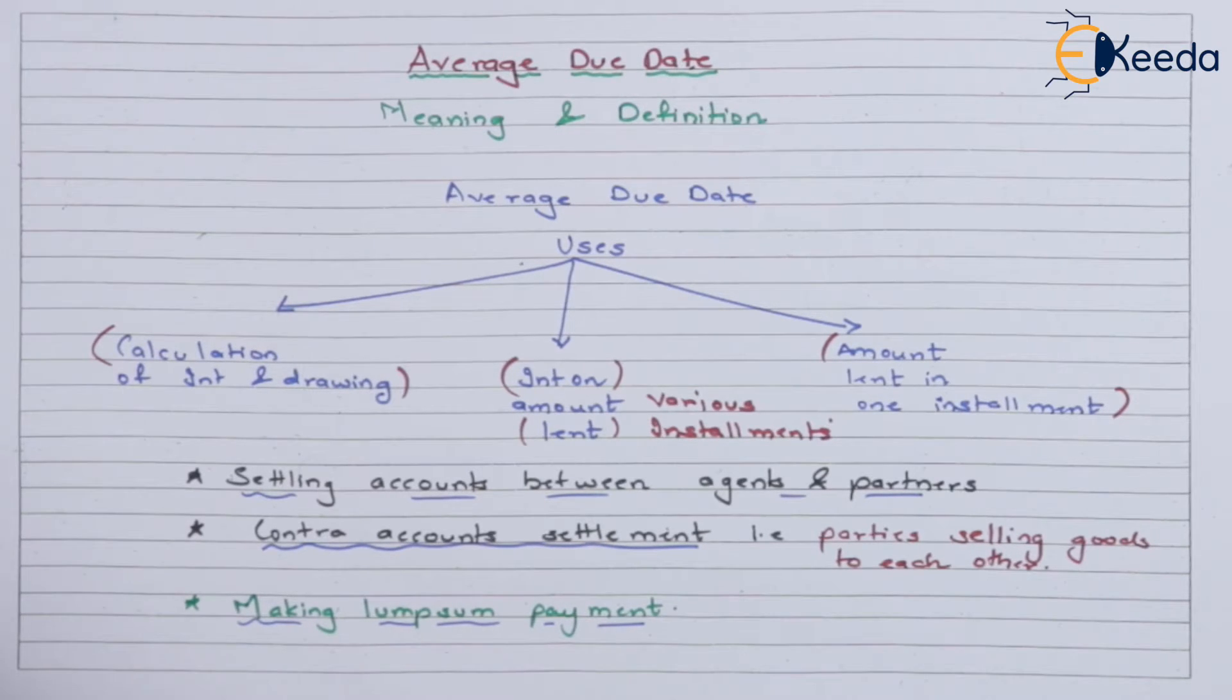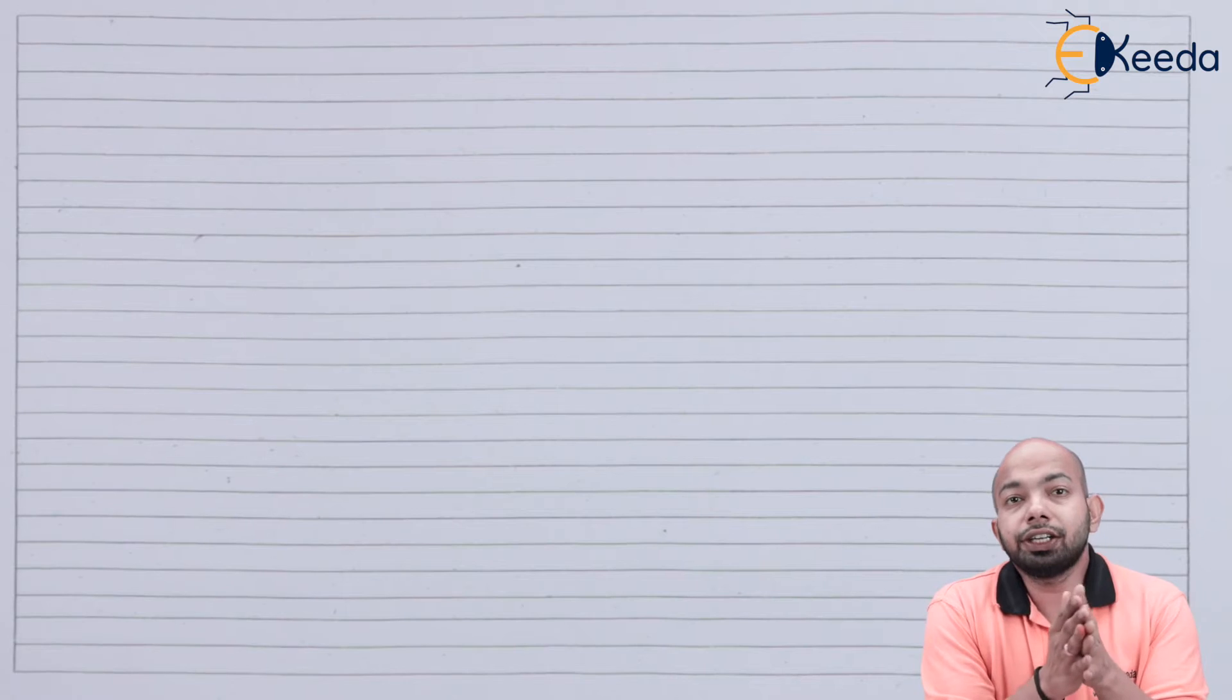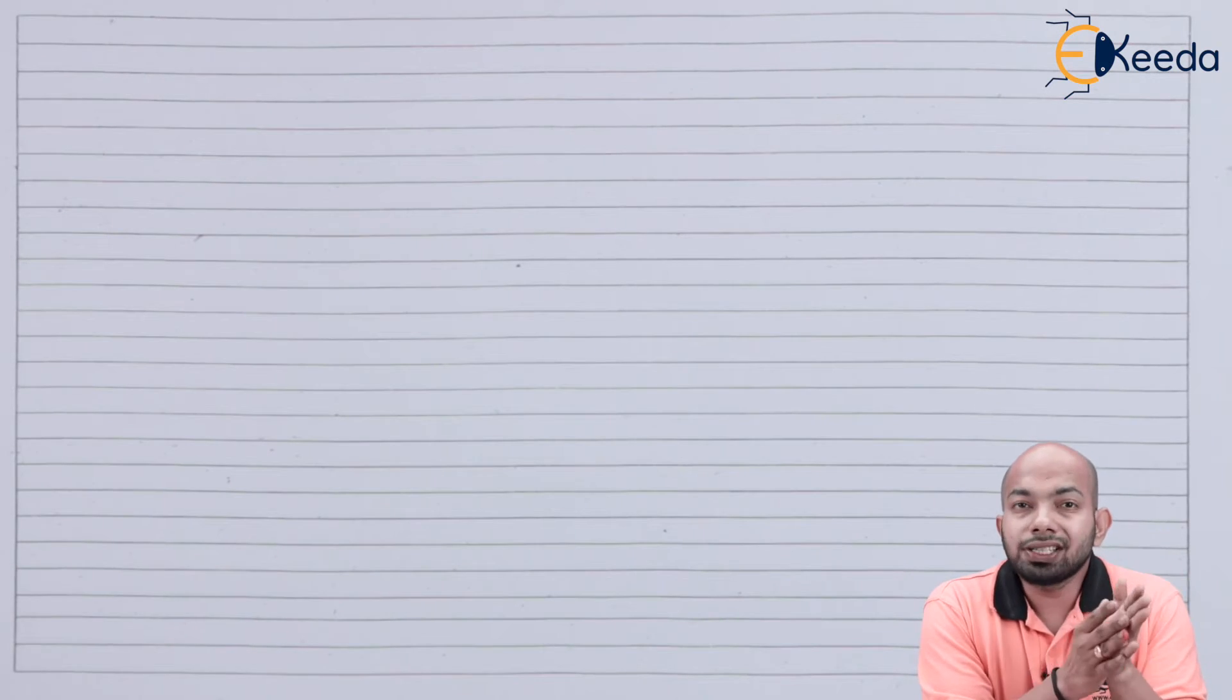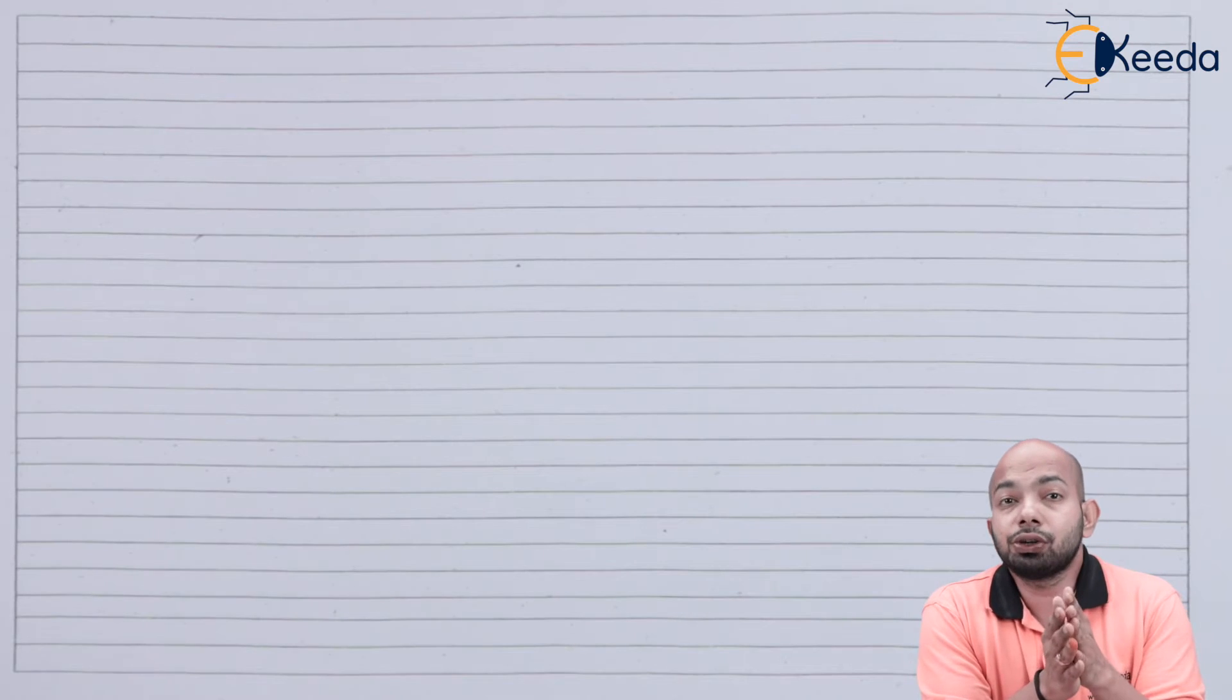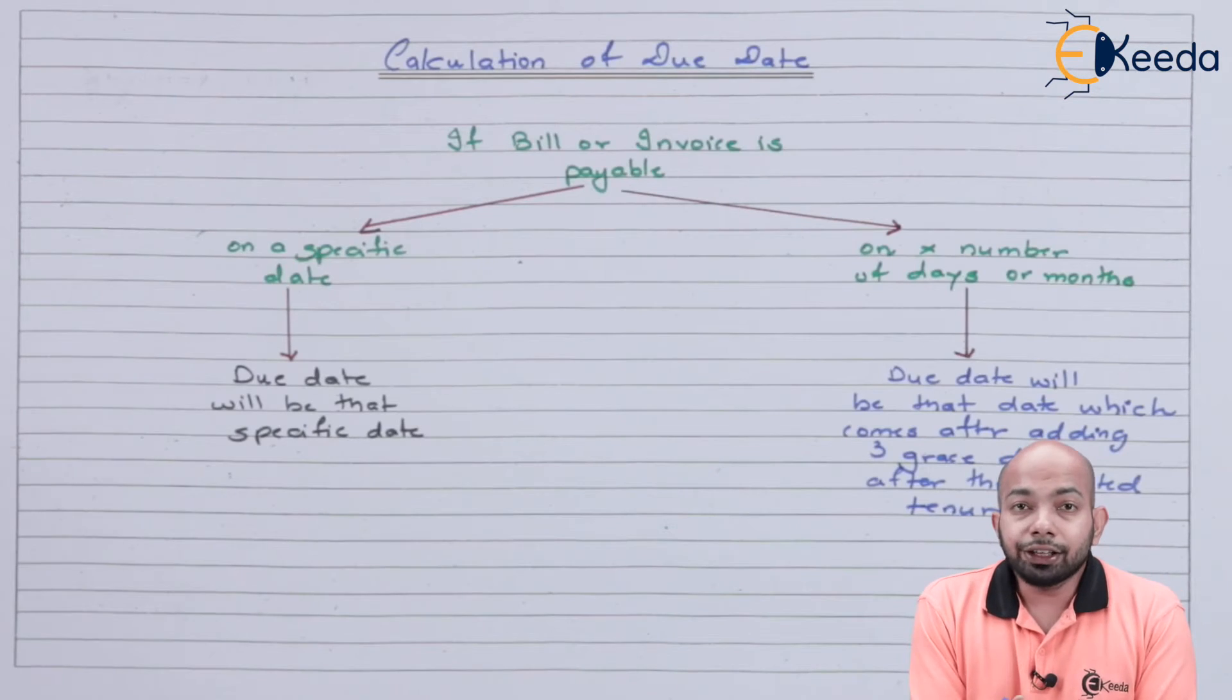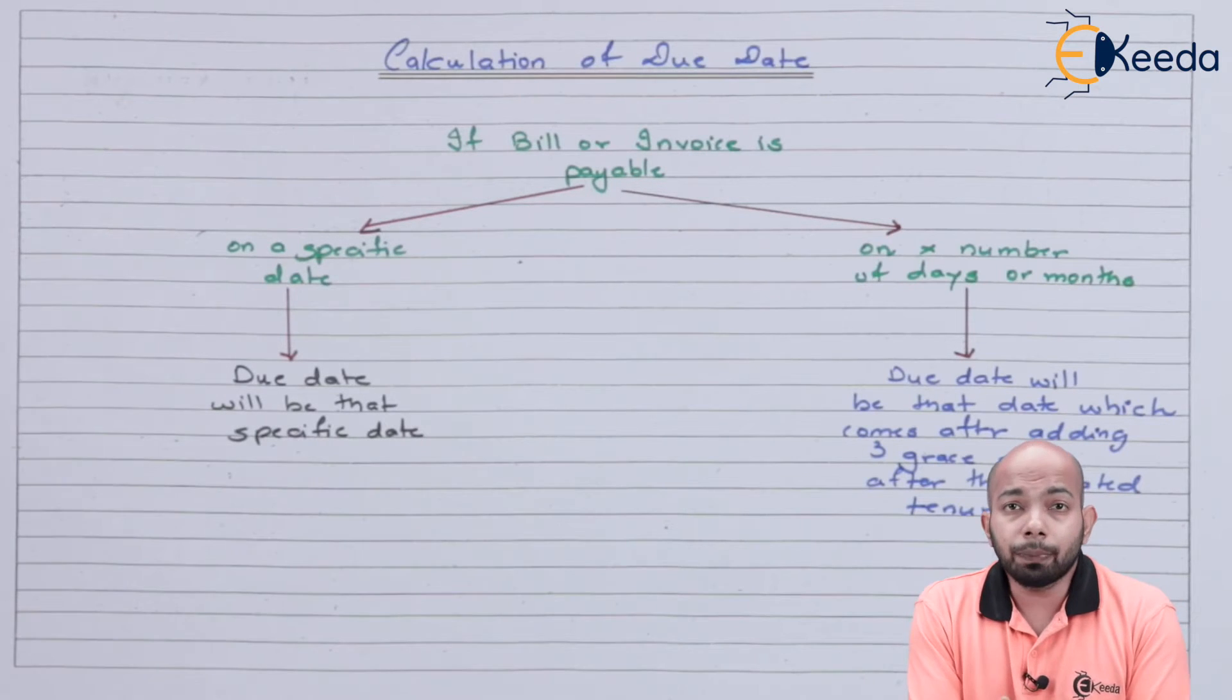But before that, let's understand a few more details about how to basically calculate the maturity of bill or the due date calculation. The next concept that we'll be understanding is how to calculate the due date, not the average due date but the due date. So the first thing that we have to understand is calculation of due date. I'll draw a flow chart for you here through which you can understand how basically this thing is done. Now imagine if you have a bill or an invoice which is payable.